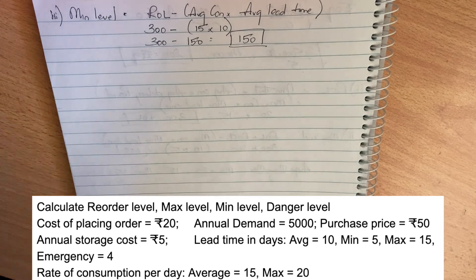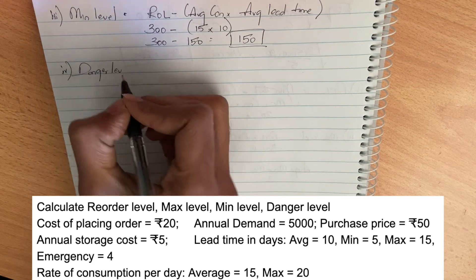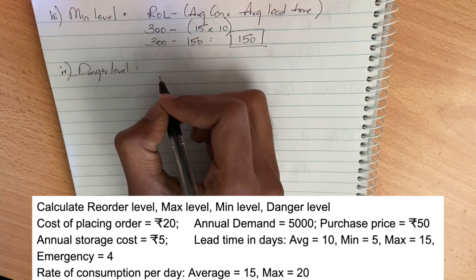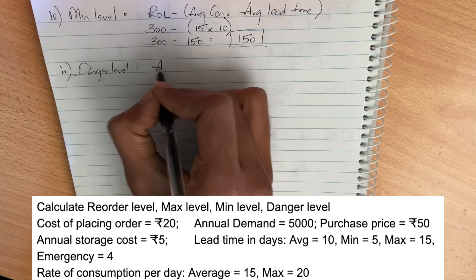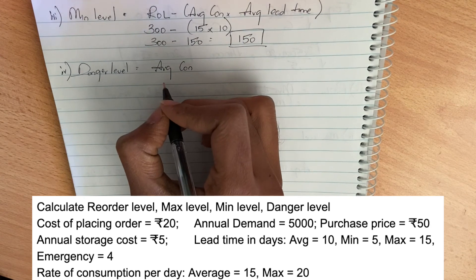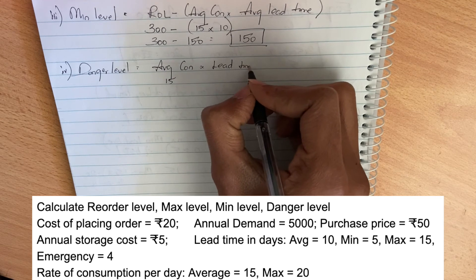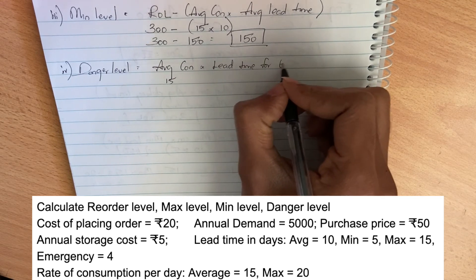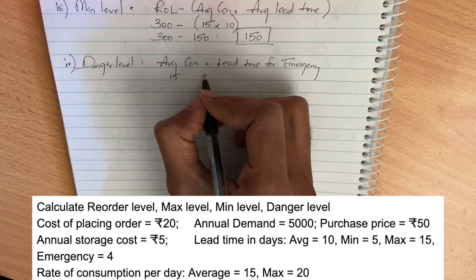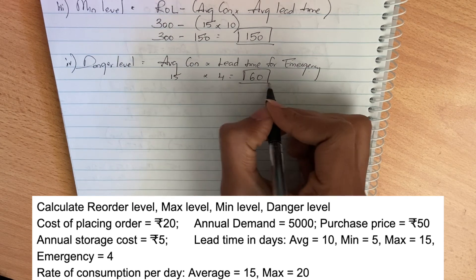Lastly, danger level. The danger level formula is average consumption into lead time for emergency purposes. Average consumption is 15 into lead time for emergency, which is equal to 4 days, so 60. So 60 is the danger level.